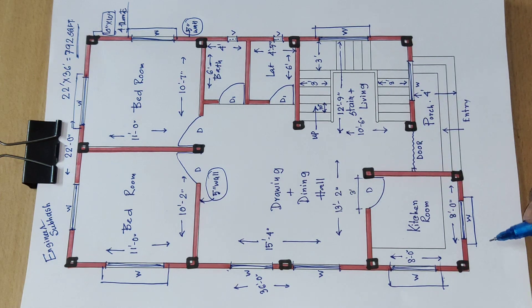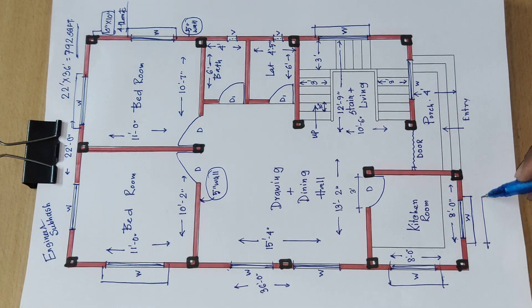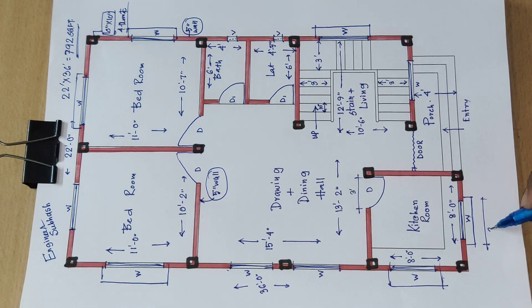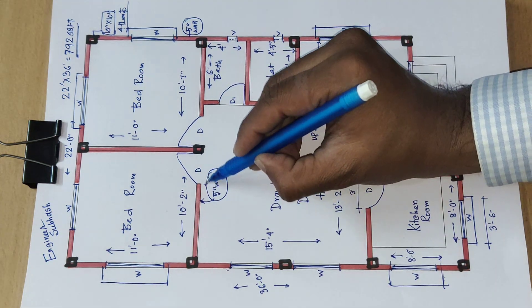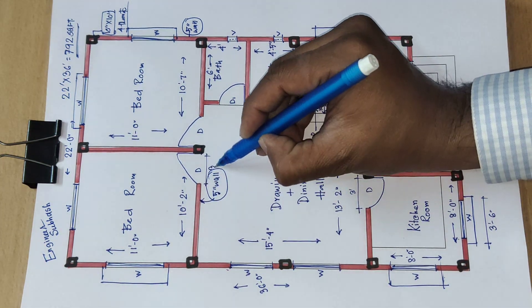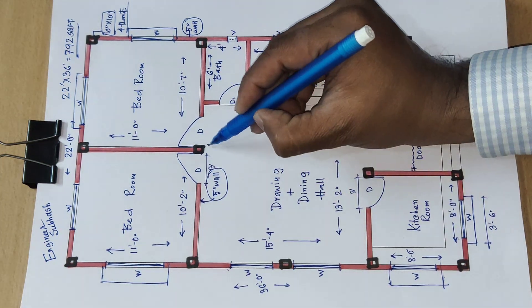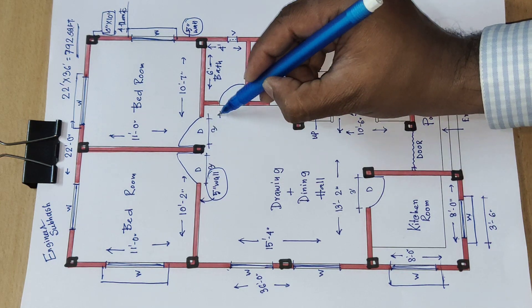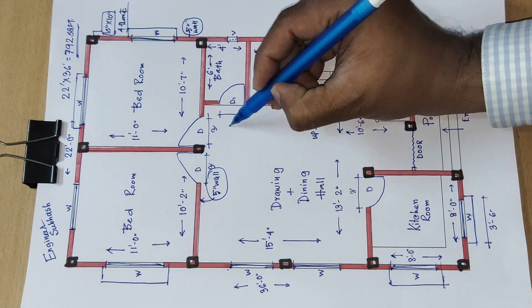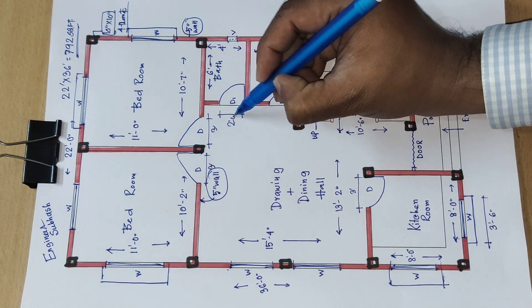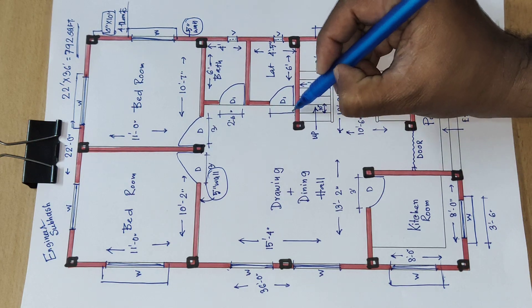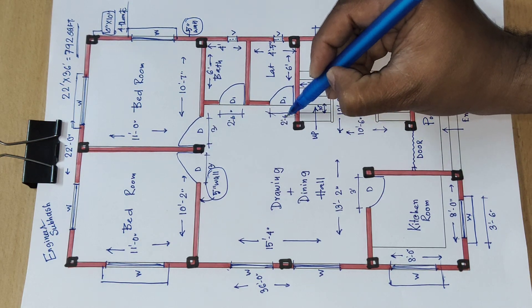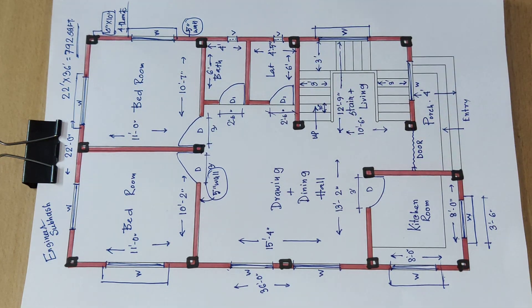The window here is 3 feet 6 inch wide. The doors are 3 feet wide. One door is 2 feet 6 inch wide. Here we create this door at 3 feet.